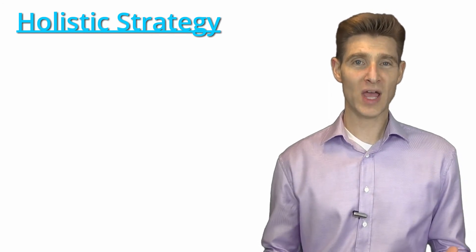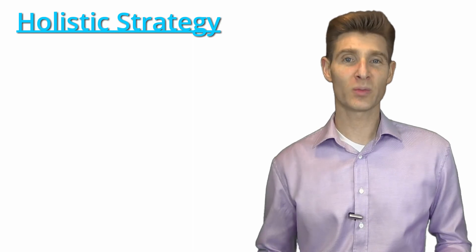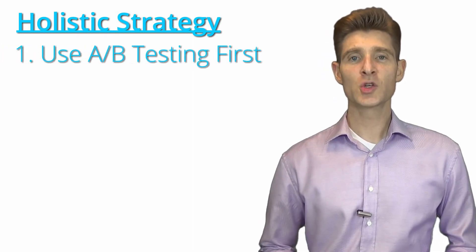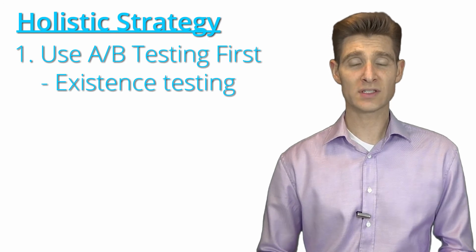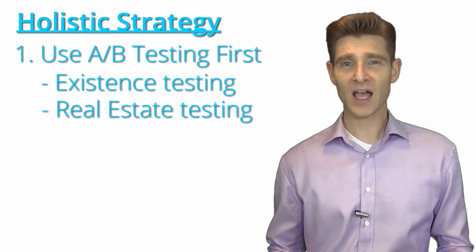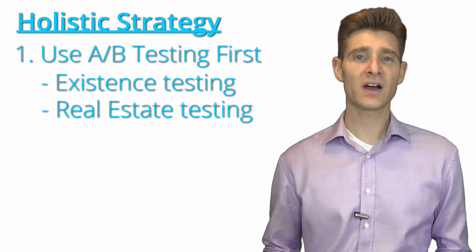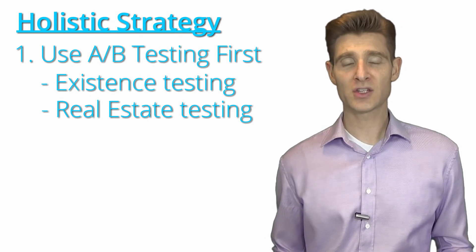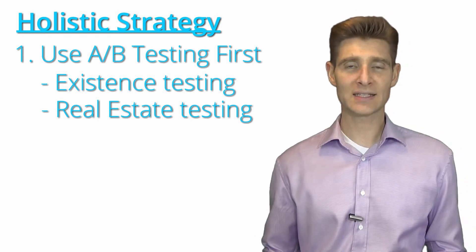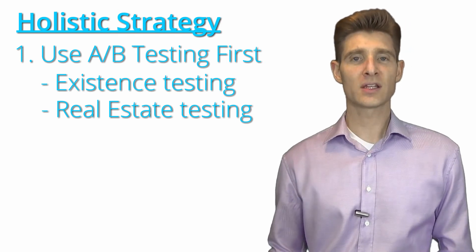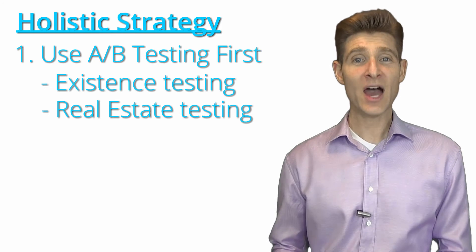Now I want to give you a simple strategy to get the best of both worlds. The first step is to use A/B testing initially to identify the elements that matter. You'll do existence testing, test the real estate of an element — its size, location, and importance — and do a lot of A/B testing to verify that the elements and layout of the page are valuable to your visitors. You don't want to do multivariate testing with big drastic layout or design changes. Use A/B testing to first discover the layout and the elements that matter, and then you'll be ready to do multivariate testing.